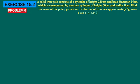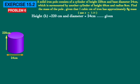Let us analyze the problem. There is a pole in the shape of a cylinder with height 220 cm. Diameter is 24 cm, so radius = 12 cm. That is the first cylinder's data. Above that, surmounting it, is another cylinder of height 60 cm and radius 8 cm. The first cylinder has the bigger radius of 12 cm, and the second has the smaller radius of 8 cm.